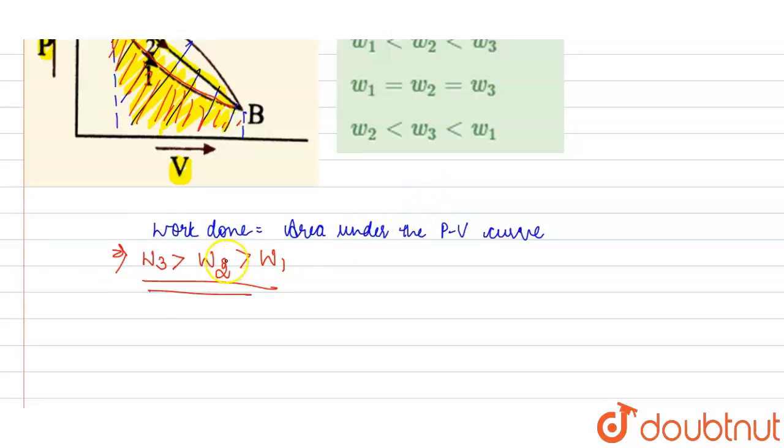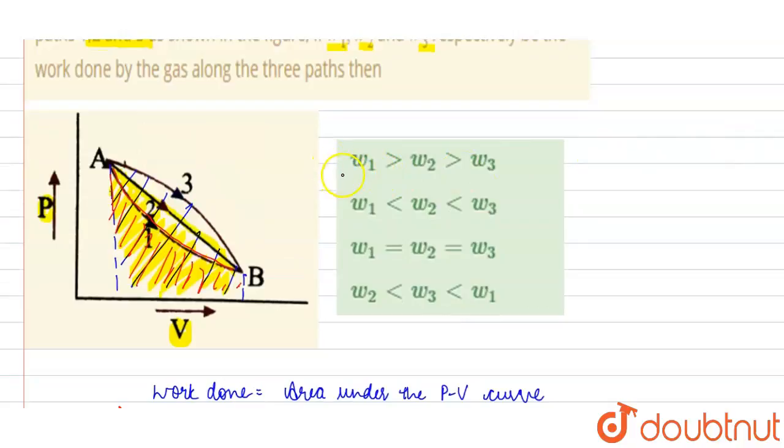Your correct order will be W3 greater than W2 greater than W1. So, this is your correct order. Second option is your correct option.